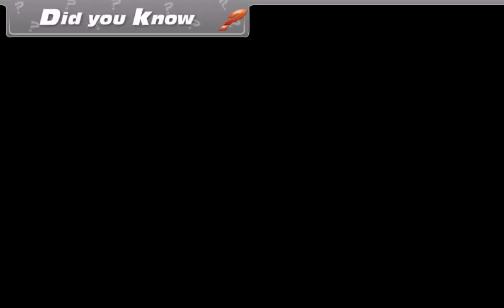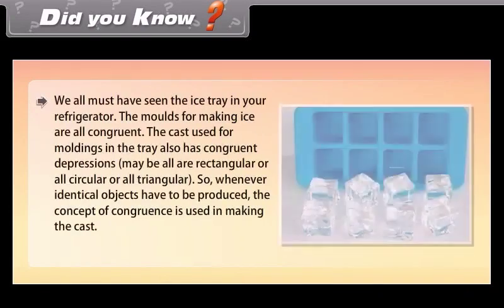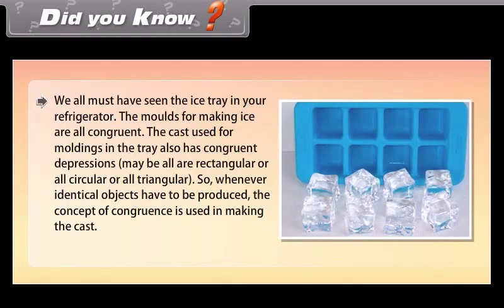We all must have seen the ice tray in a refrigerator. Observe that the moulds for making ice are all congruent. The cast used for moulding in the tray also has congruent depressions — maybe all are rectangular, or all circular, or all triangular. So whenever identical objects have to be produced, the concept of congruence is used in making the cast.